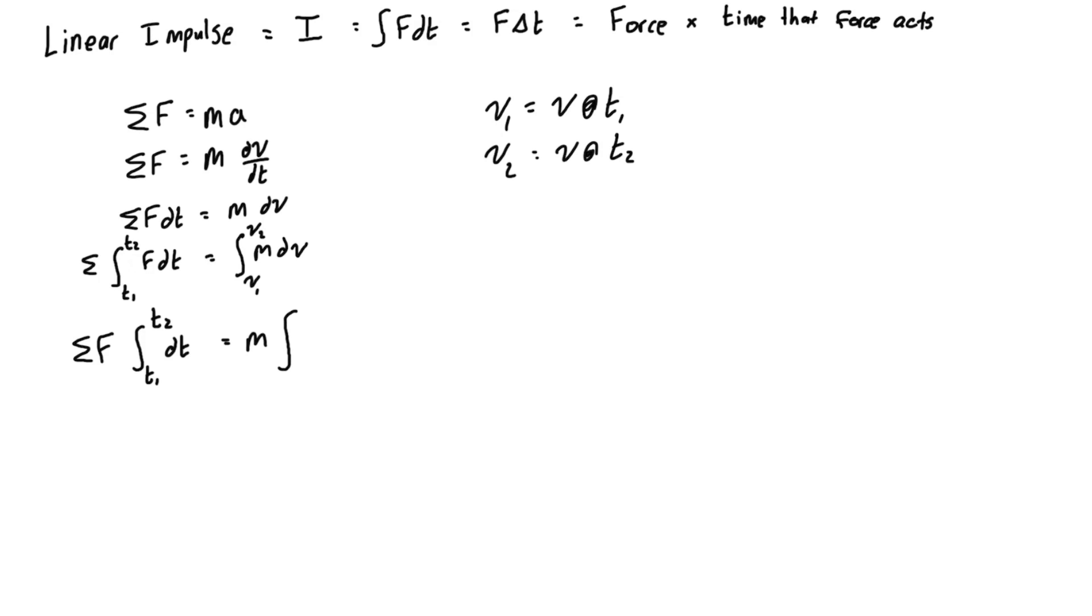We have the mass on the outside of the integral from v1 to v2 dv. These become very simple integrations. On the left hand side we just get sum of forces times t2 minus t1, and on the right hand side we get mass times v2 minus v1.